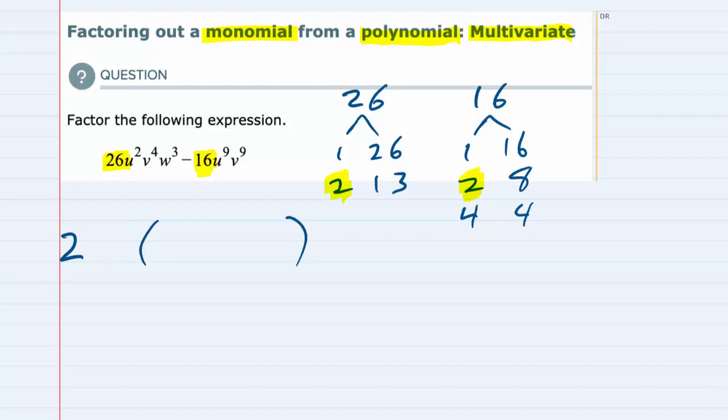But then I'm going to look at the variables and they both have a u. The first term has a u², so it has two u's, and the second term has a u⁹. So that means that they both have at least two u's or u squared.